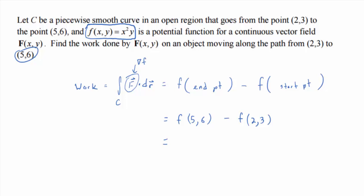Okay, so f of (5,6), what's that going to be? So, five squared, 25 times, dot symbol for time, six, minus f of (2,3). That's what, four times three, 12.